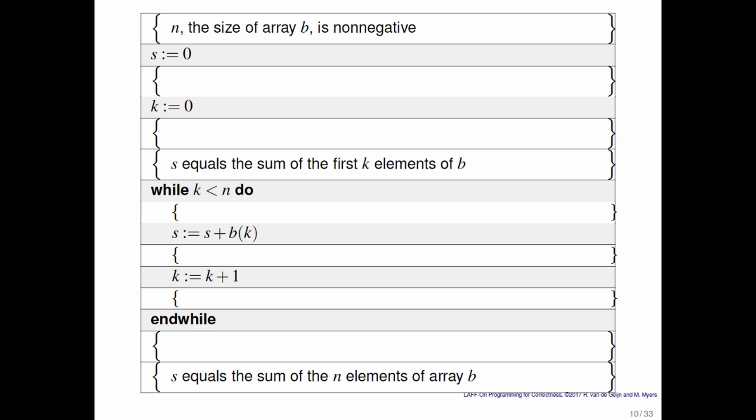Only when starting with an array of numbers of non-negative length can you hope for this program to compute the correct answer, which is that s equals the sum of the n elements of array b.